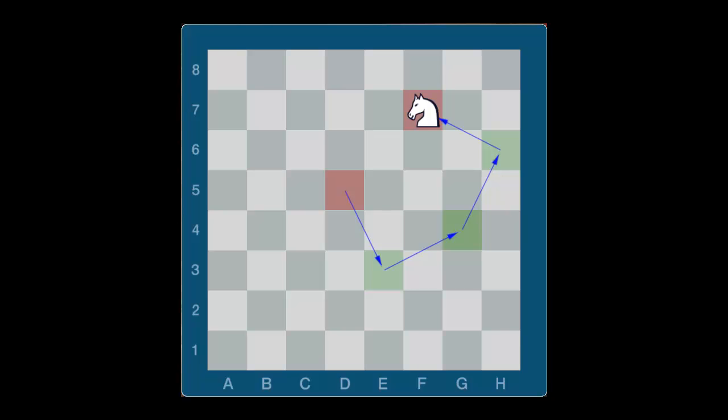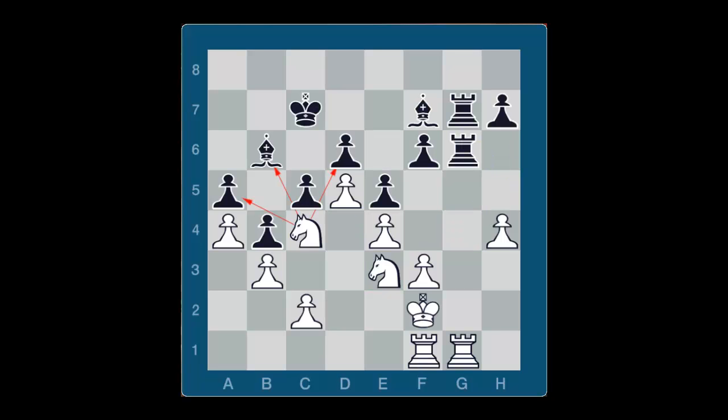A knight is very good in a closed game because it can jump over other pieces. We also want to find outposts for the knight. An outpost is a square deep in the enemy camp that an enemy pawn cannot attack.